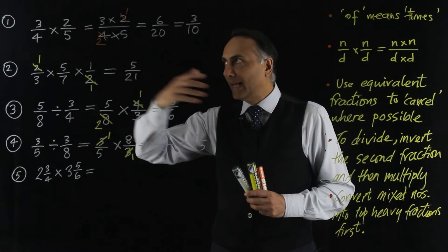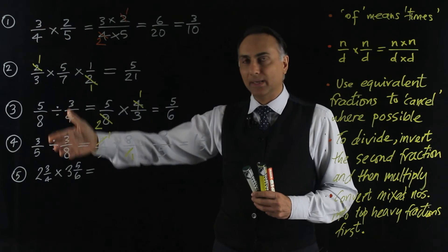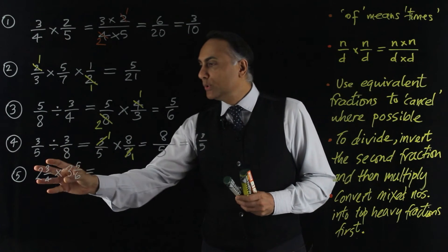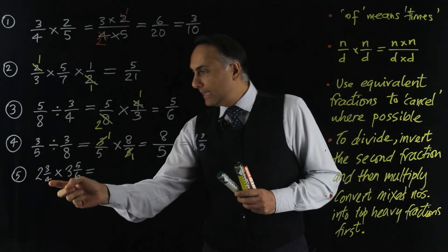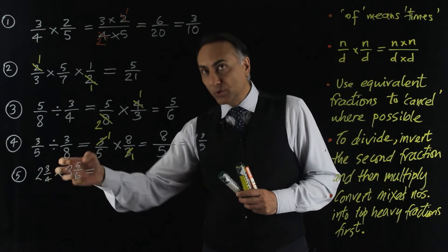What you must do is turn any mixed numbers into top-heavy fractions first, and then multiply exactly the same as we've been doing up to now. So 2 and 3 quarters as a mixed number. Well, remember, here we have quarters.